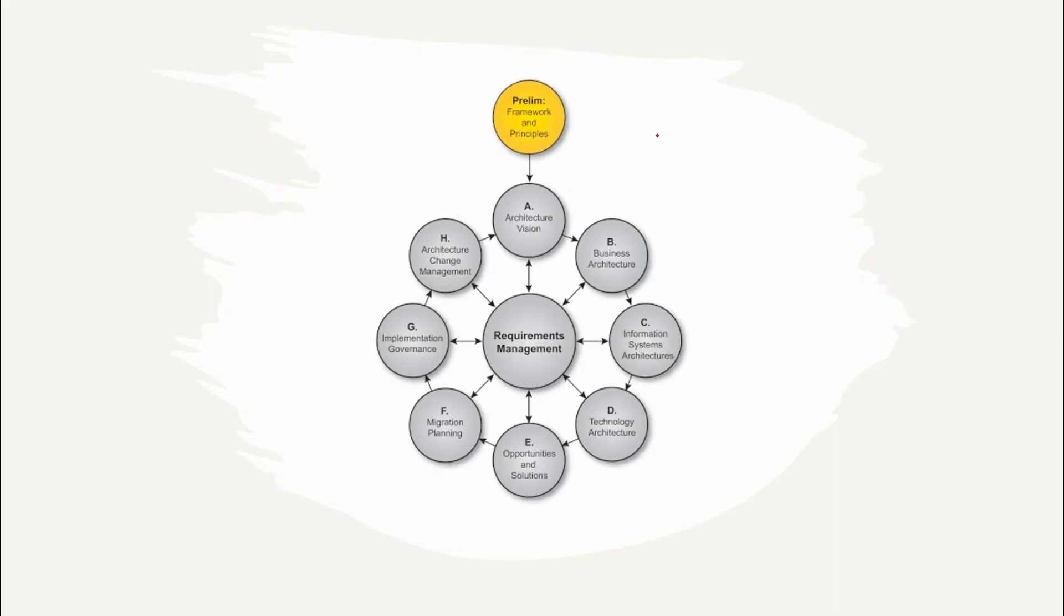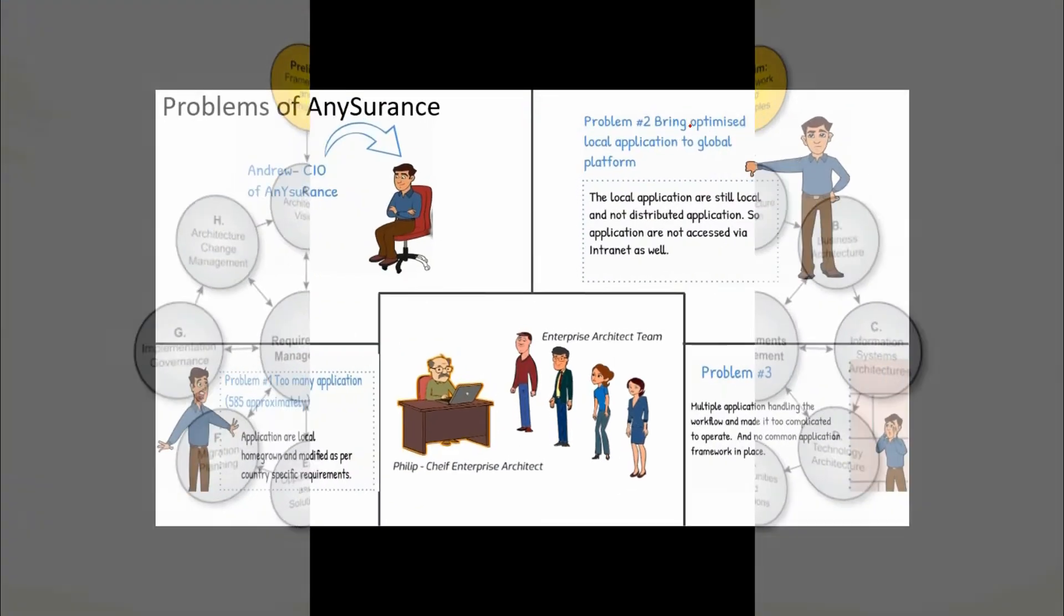In this section we will learn how to apply the preliminary phase in development of an enterprise architecture. Here we will start applying the TOGAF concepts that we have learned in TOGAF Phase 1 of this course earlier. By end of this lesson, you will be able to understand how to set up framework and principles in the preliminary stage applying the TOGAF concepts learned in Phase 1.